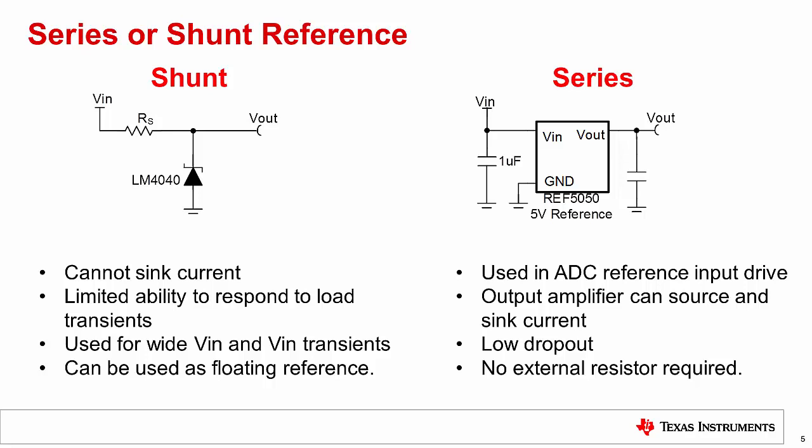One possible exception would be cases where the shunt reference is followed by a wide bandwidth buffer. The series reference, on the other hand, is the type we will be focusing on in this presentation, because they are the most common type used for ADC input drive. The series regulator has an internal bandgap reference and an amplifier that buffers the reference voltage. Normally, the series regulator output can source or sink current, which makes this type of regulator good for responding to transient current demands.